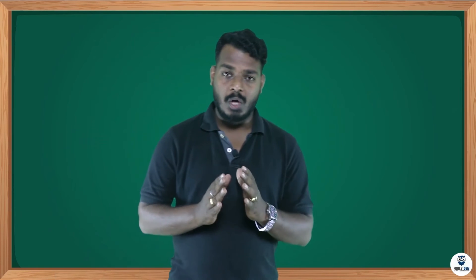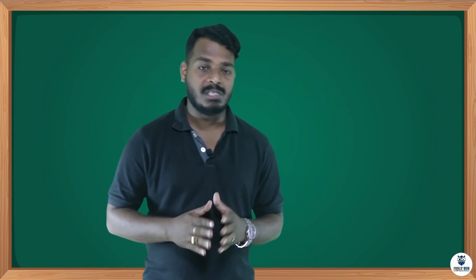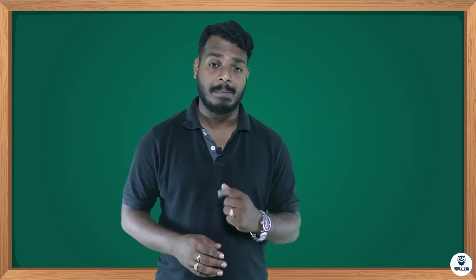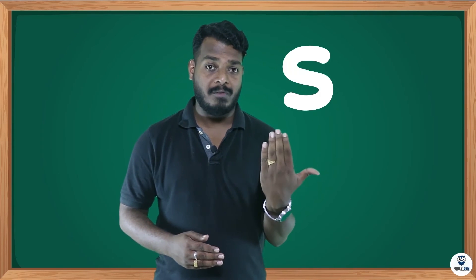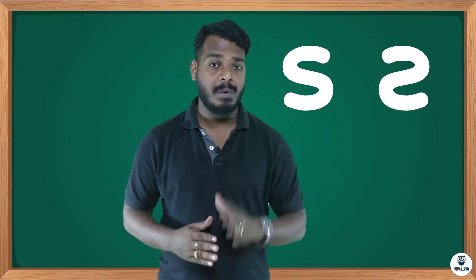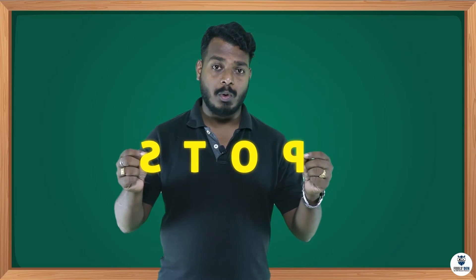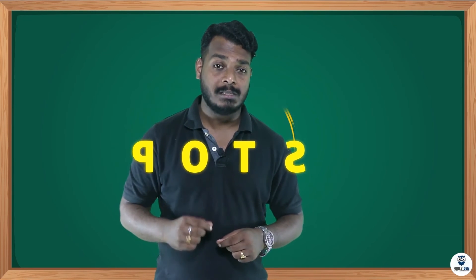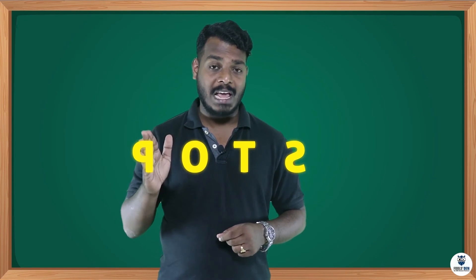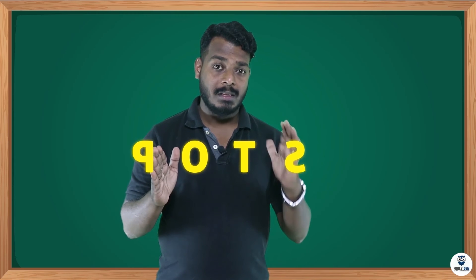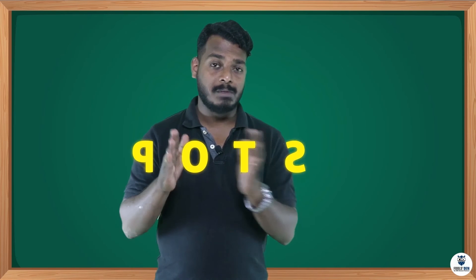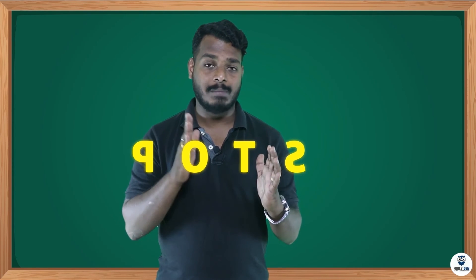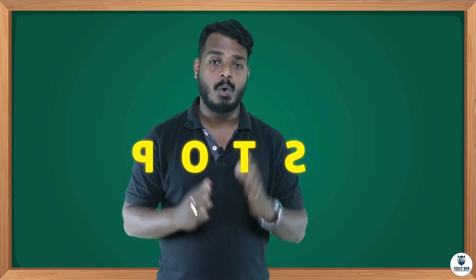In solving mirror images of words, always remember there are two steps. Step one: you have to flip every single alphabet. Step two: you have to flip the complete word — that is, the first alphabet goes to the last, the last comes to the first, the second goes to second last, second last comes to second, and so on.